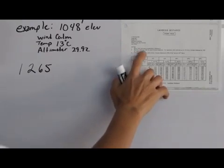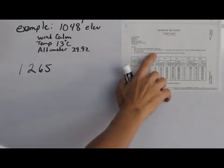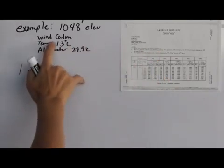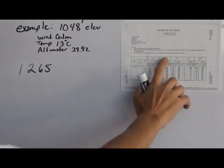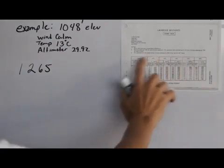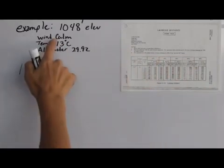And it says decrease the distance 10% for each 8 knots of headwind, but in our scenario the winds are calm, so we don't need to adjust our number. And then it says for operations with a tailwind, then you have to adjust your number also, but our winds are calm.